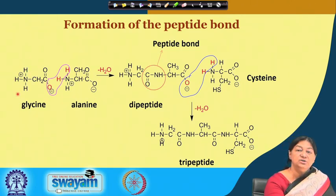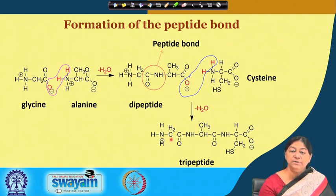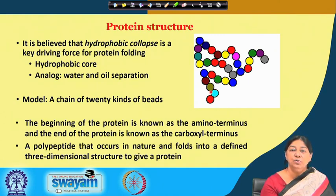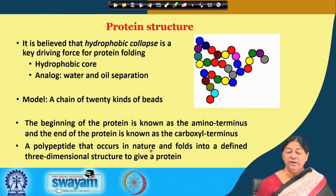The direction of the chain is known because the peptide bond is formed between the COOH and the NH2 of the next amino acid. The beginning of the protein is known as the amino terminus and the end is the carboxyl terminus. The polypeptide that occurs in nature and folds into a definite three-dimensional structure is called a protein.